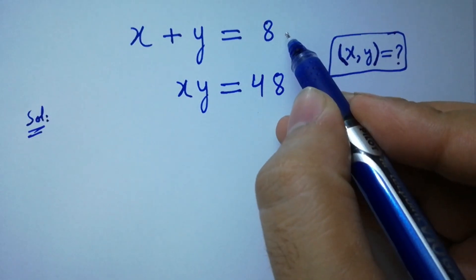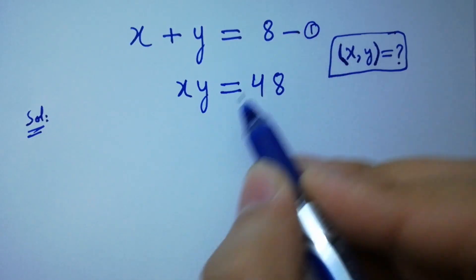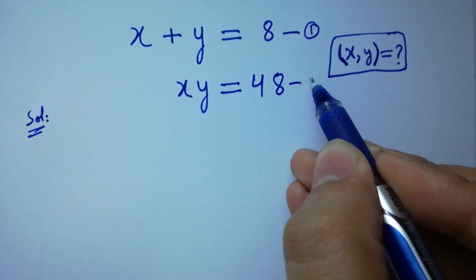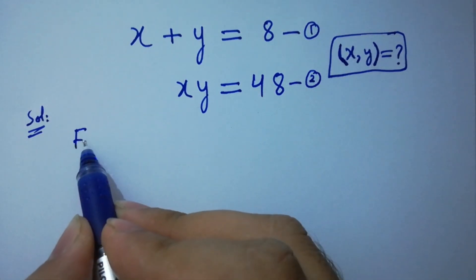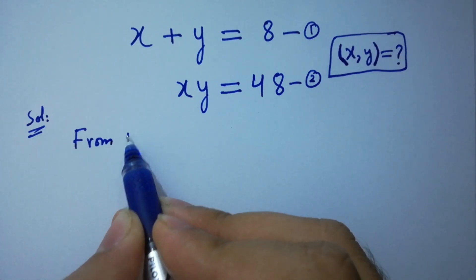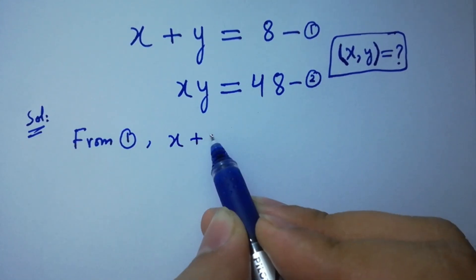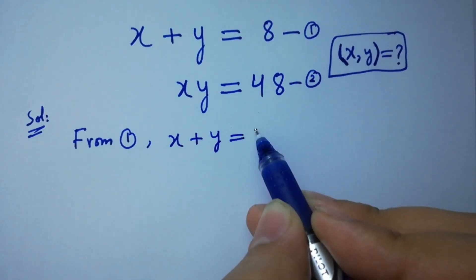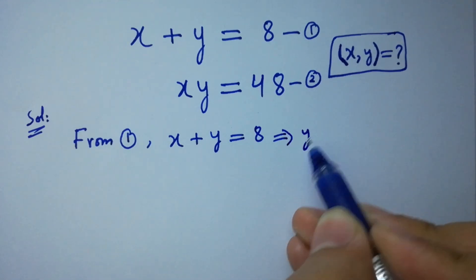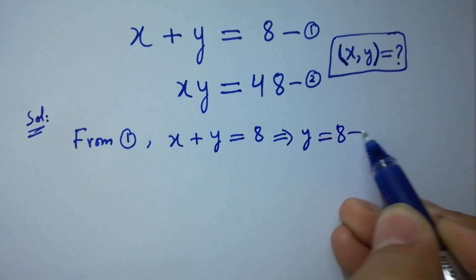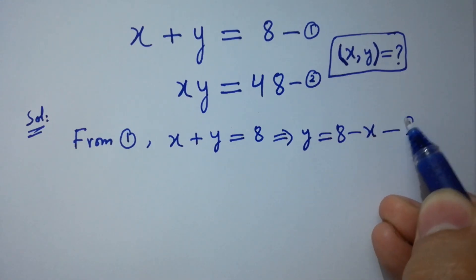Let x plus y equal to 8 be the first equation, and x times y equal to 48 be the second equation. From the first equation, x plus y equals 8, so y equals 8 minus x. Let this be the third equation.